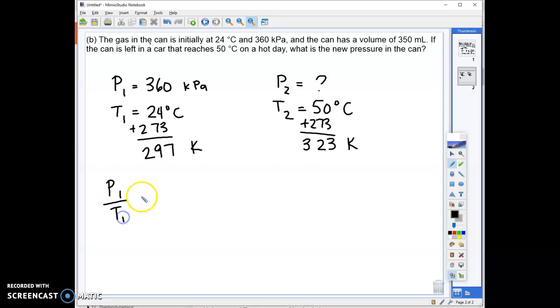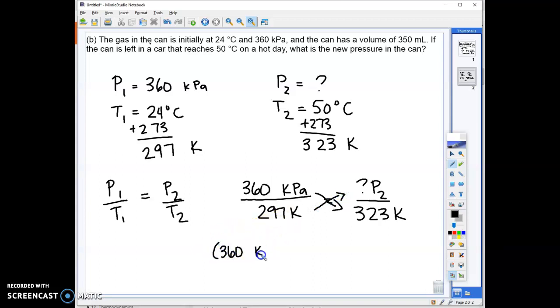So then I'm ready to plug into my formula. That's really what the gas laws are. Once you figure out what gas law you need to use, then you essentially just plug in your numbers. So I've got 360 kilopascals for my P1, 297 K for my T1, I'm looking for my P2, and I have 323 K for T2. So in order to set this up and solve, I'm just going to cross multiply. So I'm going to have 360 kPa times 323 K equals 297 K times my P2, because that's what I'm looking for.